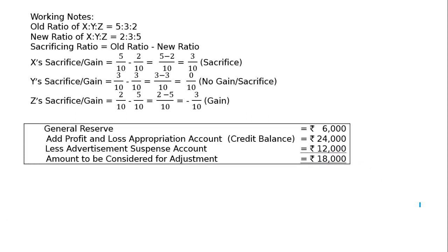The amount to be considered for adjustment is 8,000. We will take this amount of 8,000 and apply 3/10 — Z's capital account will be debited and X's capital account will be credited. Z has to pay Mr. X the calculated amount, that is 8,000 multiplied by 3/10.